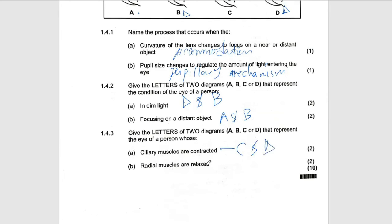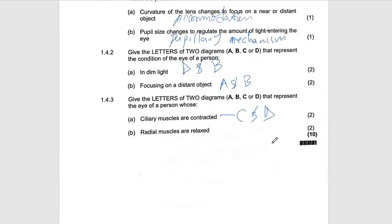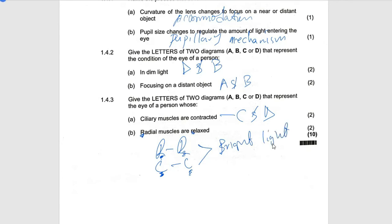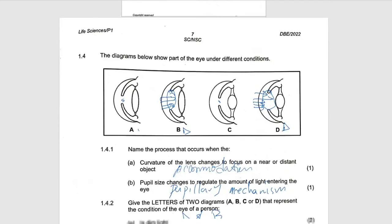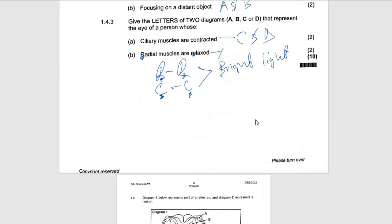When the radial muscles relax, remember: R with R, C with C — radial muscles relax, circular muscles contract. Since they are not mixed up, it becomes bright light. In bright light, the diameter of the pupil becomes smaller. The small pupil diameter corresponds to diagrams A and C, so the answer is A and C.